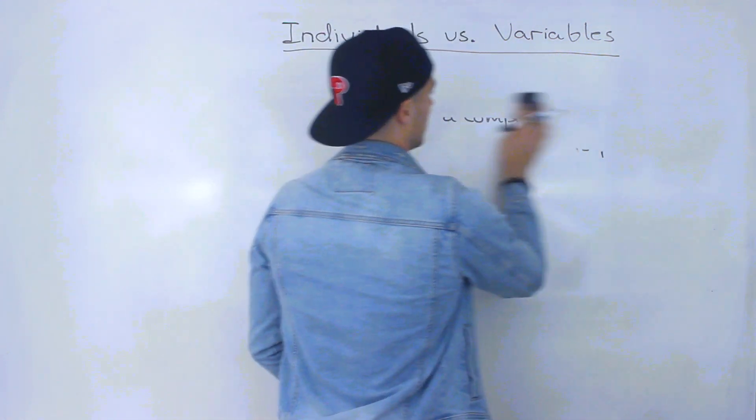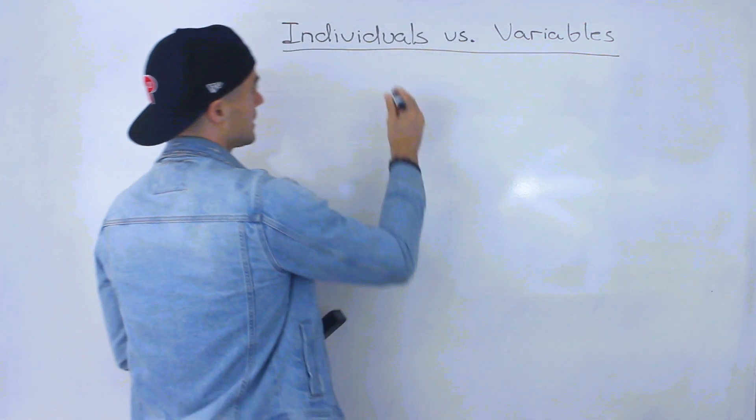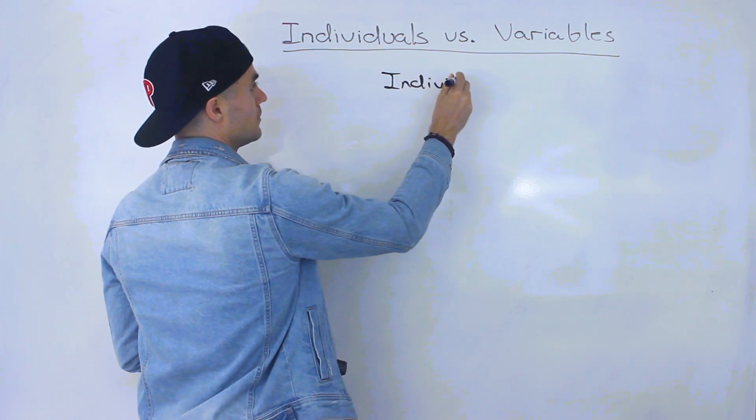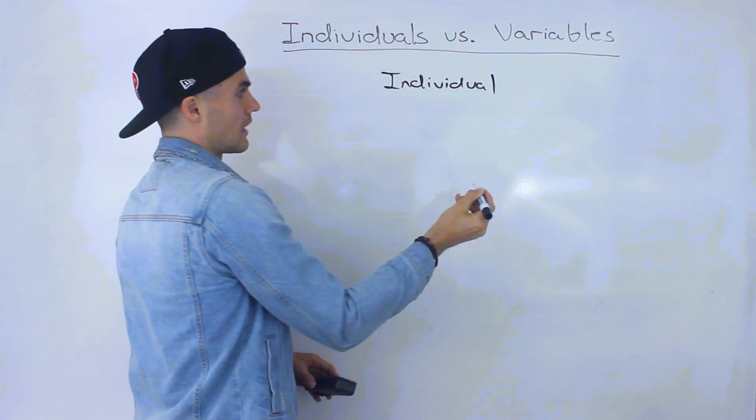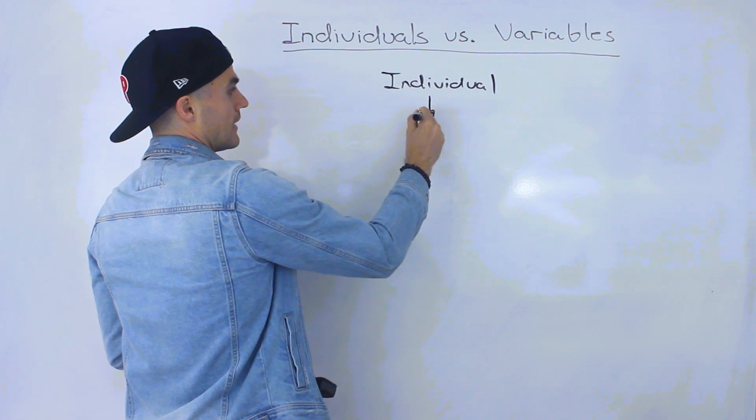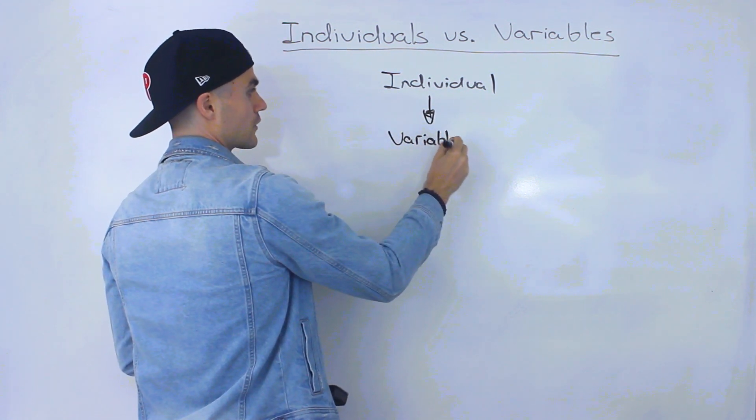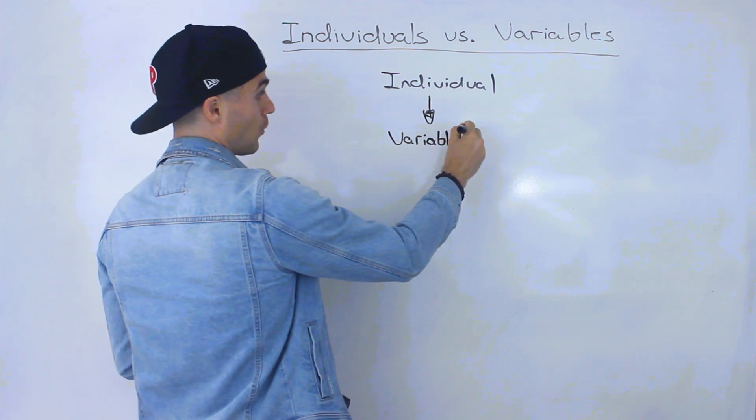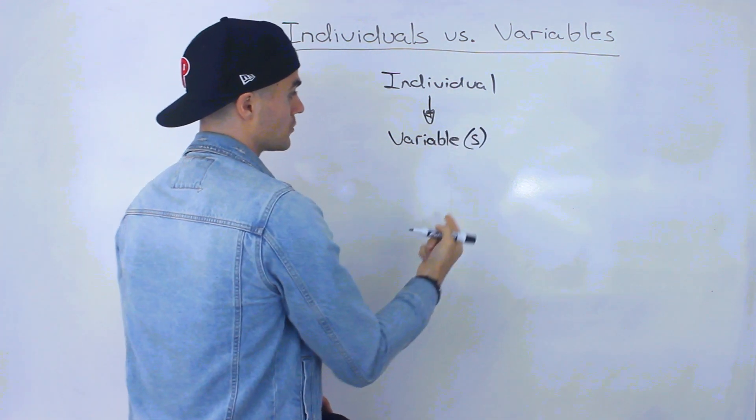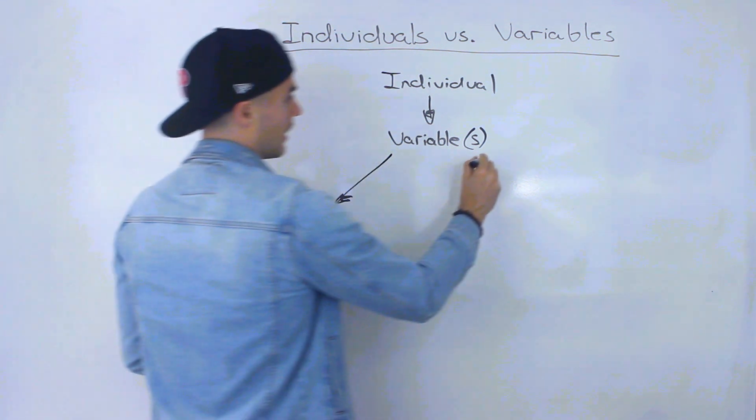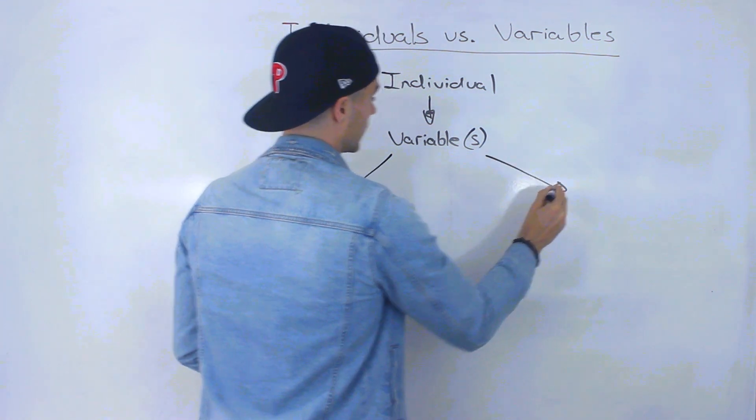So basically, here's what's going to happen is you're going to be analyzing some kind of individual. And they can be described, they can have characteristics, either one variable or multiple variables like we just saw.